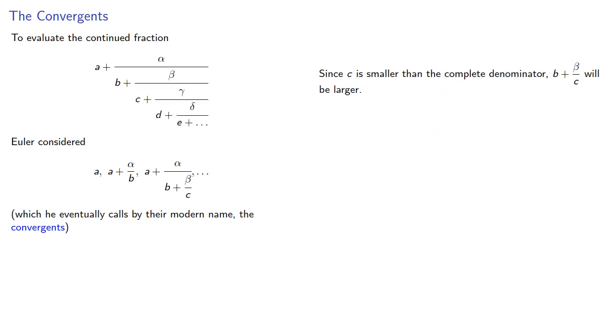For the next convergent, c is smaller than the complete denominator, so b plus beta over c will be larger than the complete denominator. And so the convergent will be smaller than the value of the continued fraction.